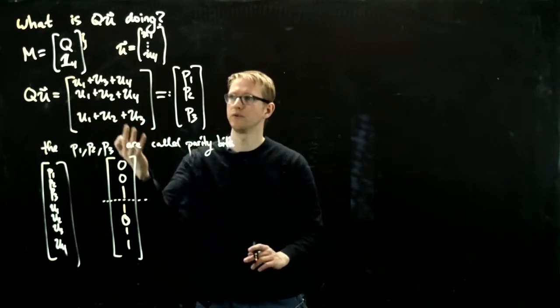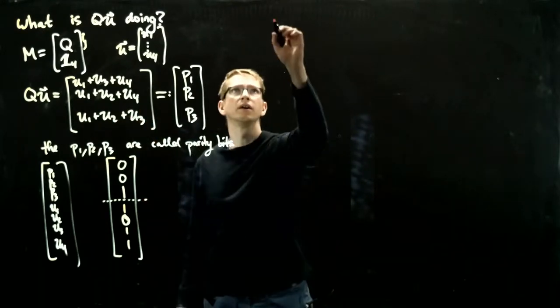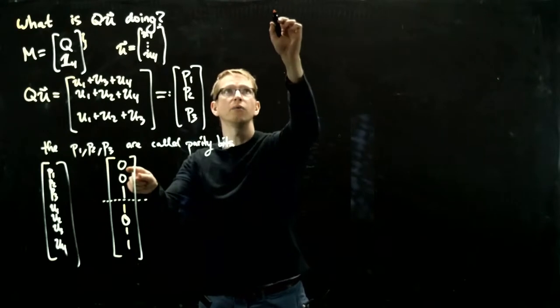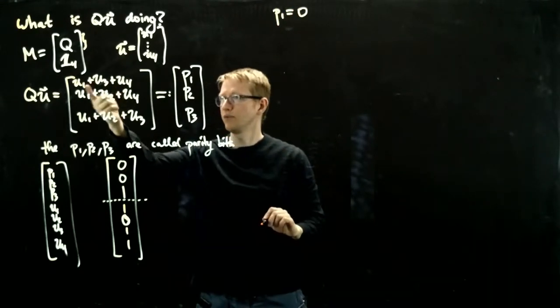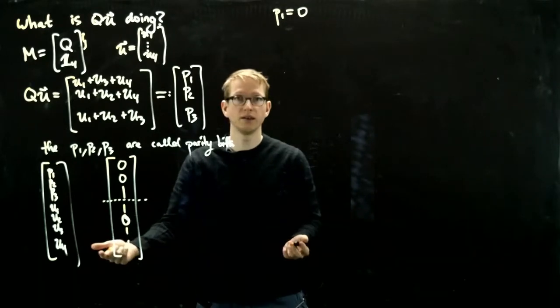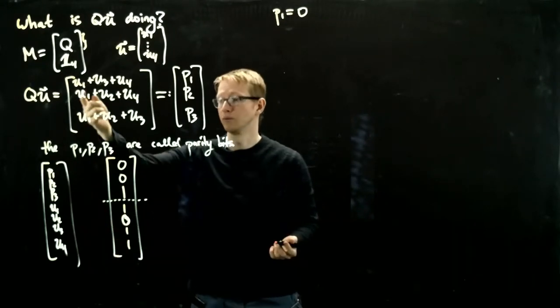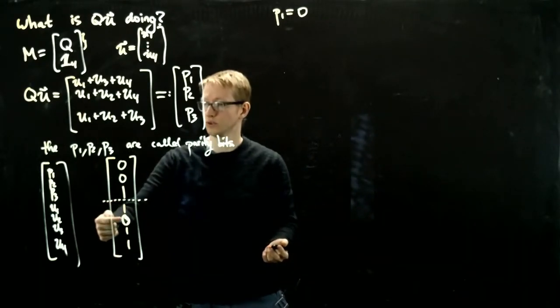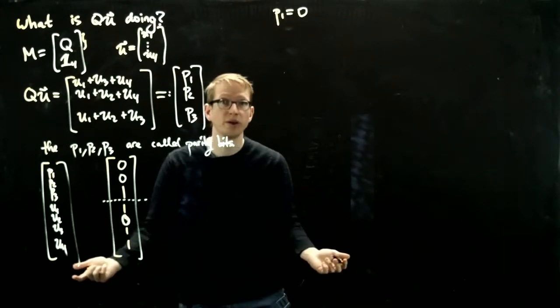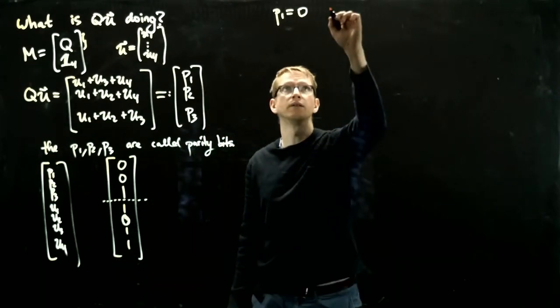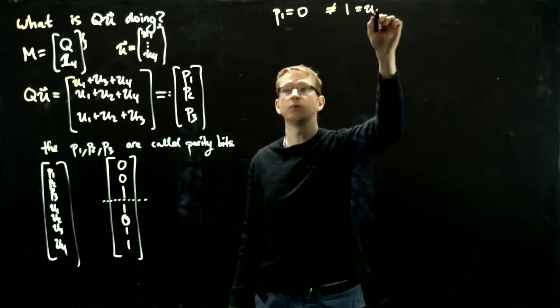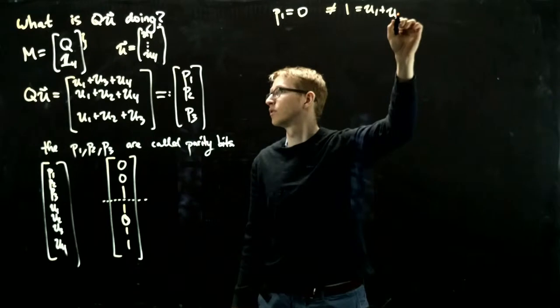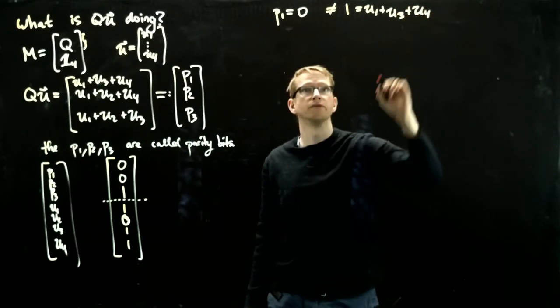So let's now look at these formulas and see what they say. p1 on the one hand equals 0, but let's see if the sum of these entries is also equal to 0. If we take u1 plus u3 plus u4, we get 1 plus 1 plus 1 is 3, which is 1, which is not equal to u1 plus u3 plus u4.